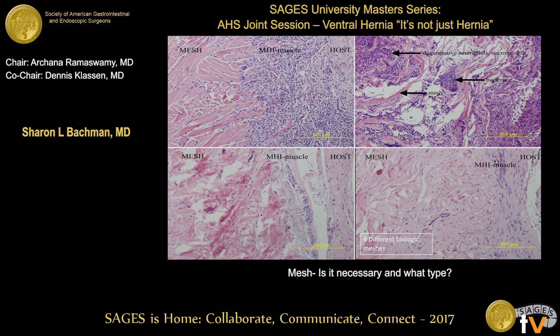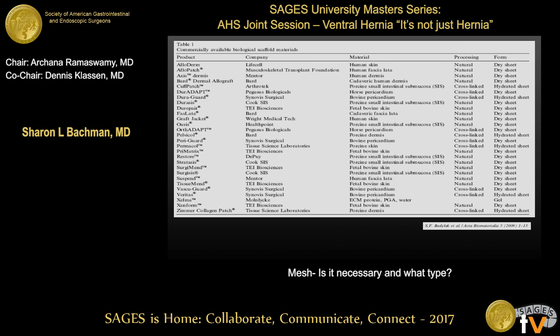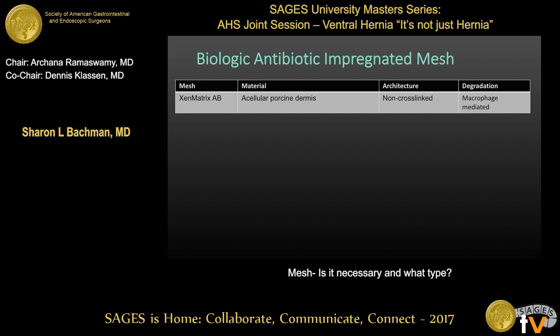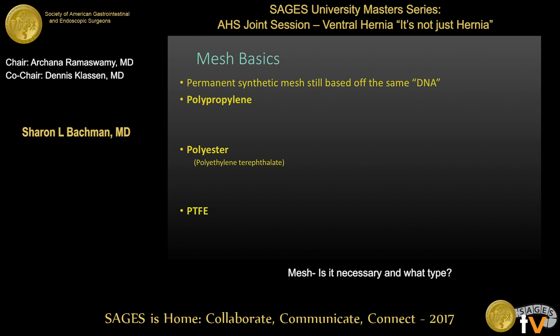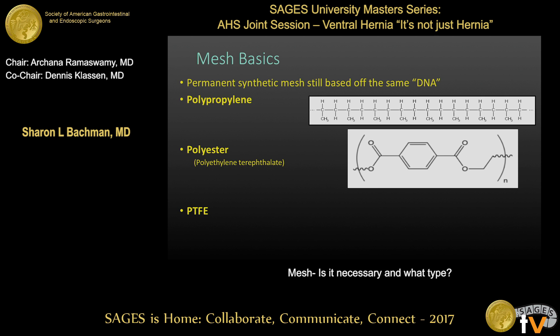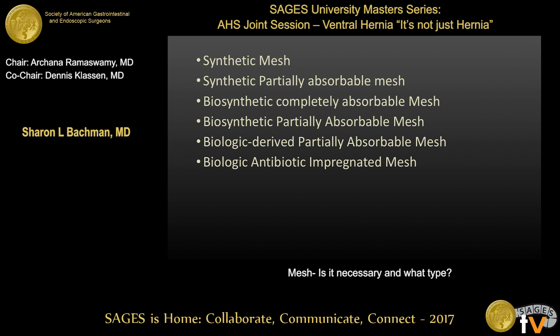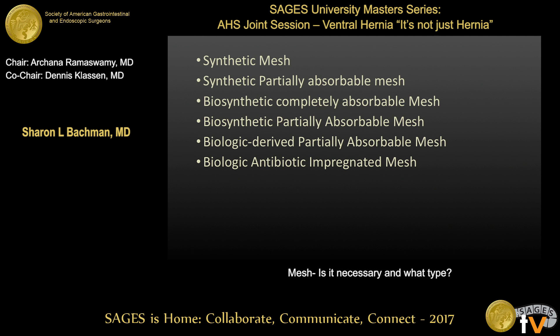Each biologic has very different properties — whether it's made from pig dermis and is cross-linked, making ingrowth very difficult, or something that cells will essentially break down within three months. Understanding the characteristic of the mesh and choosing that on purpose is important. This list of biologics is overwhelming. Add in biosynthetic resorbables and biologic antibiotic-impregnated mesh — we have a lot to choose from. But when you take a step back, remember you've got the basic materials and how they're put together: synthetics, partially absorbable, biosynthetic completely, biosynthetic partially — it just goes on.